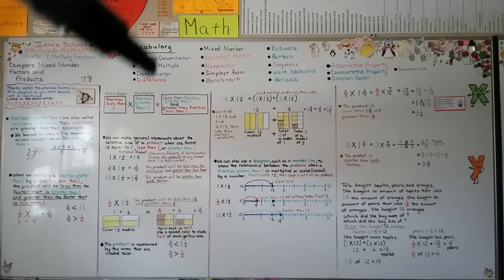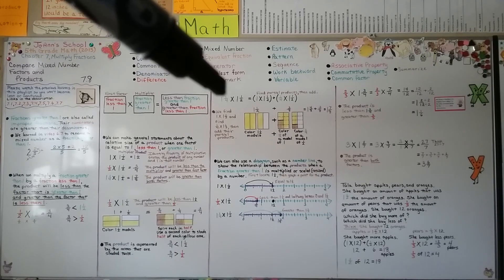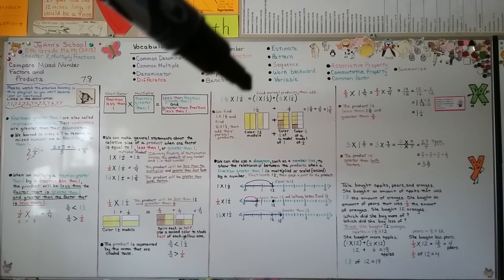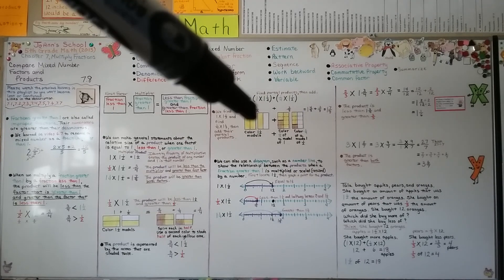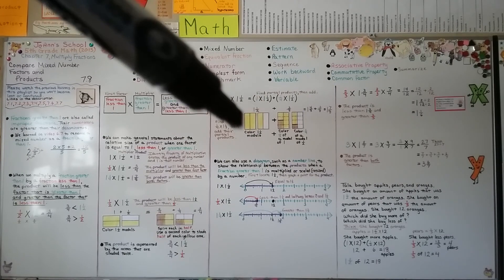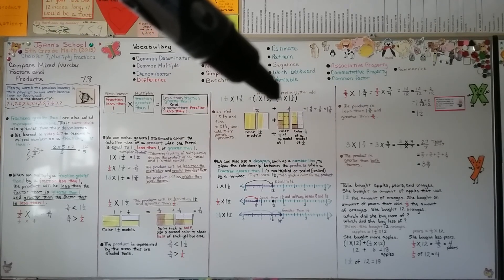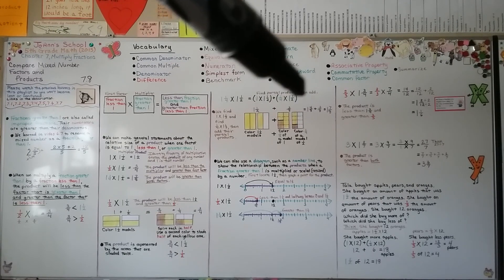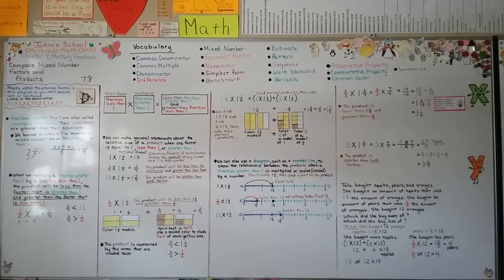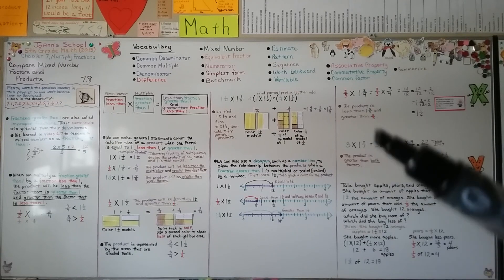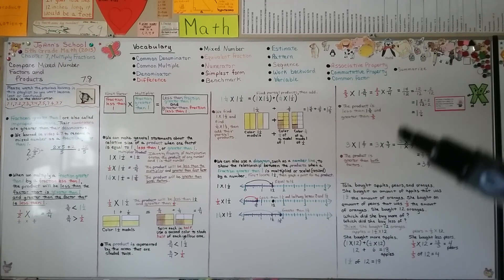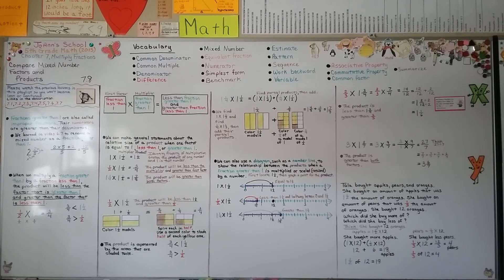Be very careful when modeling mixed number times mixed number — you'll make one whole model and add it to the other. In our next lesson, 7.9, we're going to multiply mixed numbers like we did here and practice more.